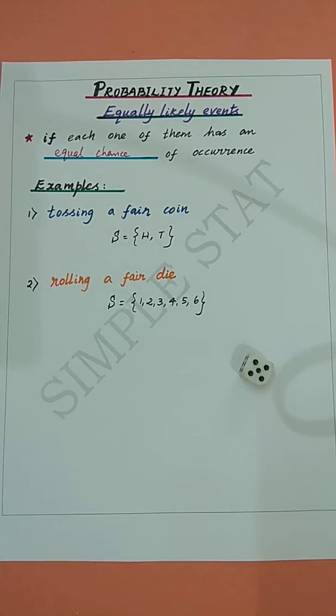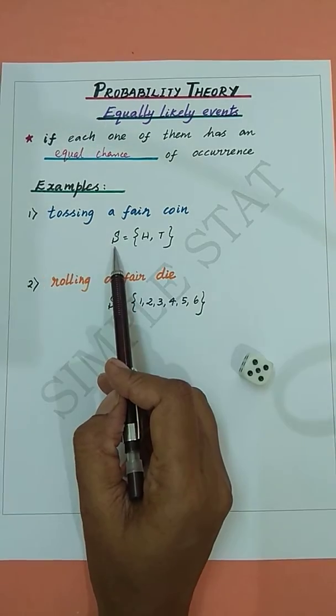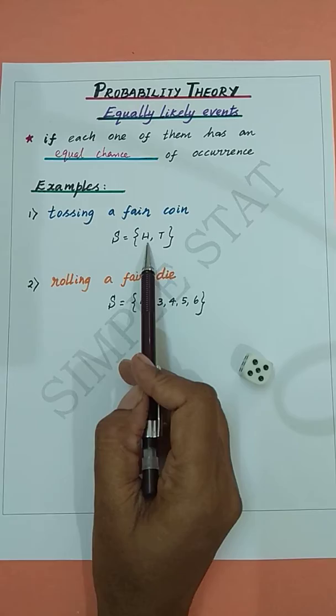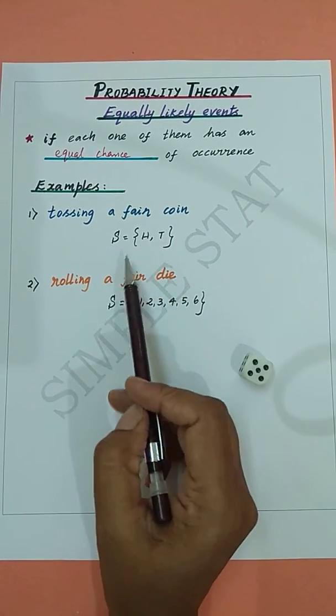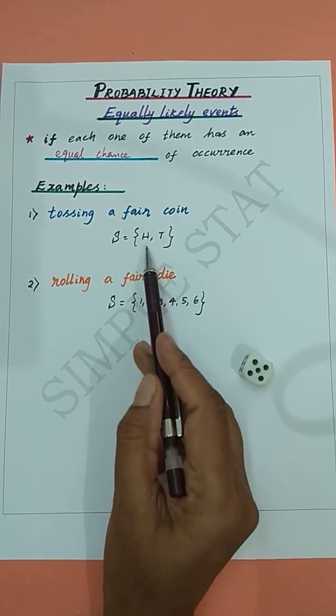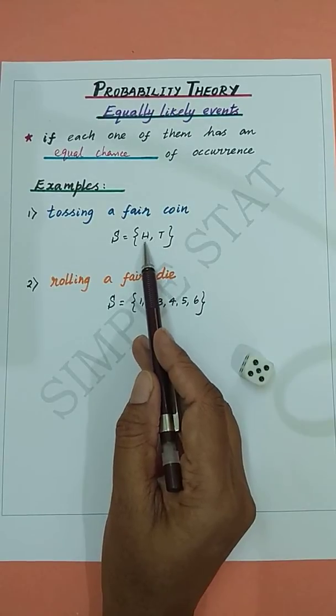Let's now look into examples. Consider a random experiment of tossing a fair coin. We know that there are only two possible outcomes, namely head and tail. Therefore, the sample space is given by S = {head, tail}. When a fair coin is thrown, head is as likely to turn up as tail. Hence, head and tail are equally likely events.